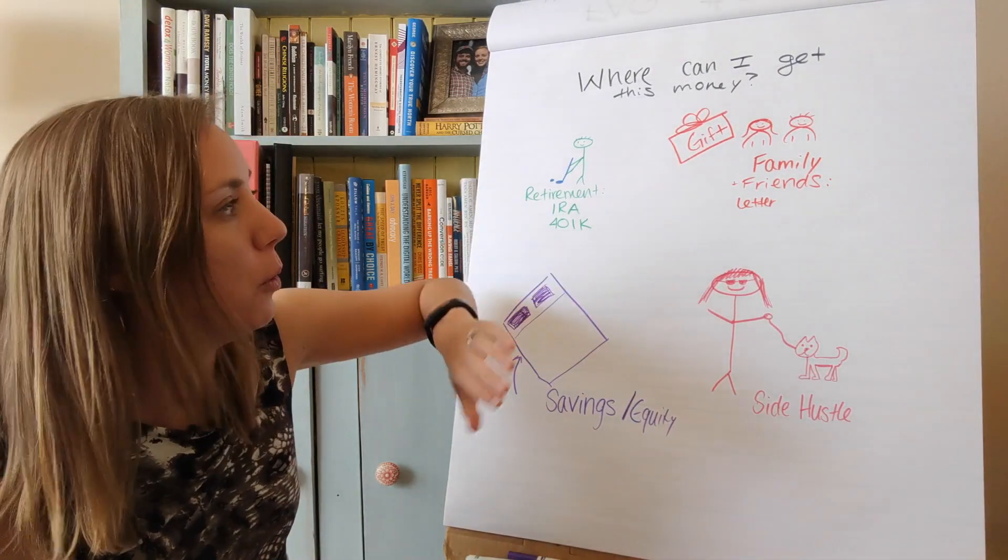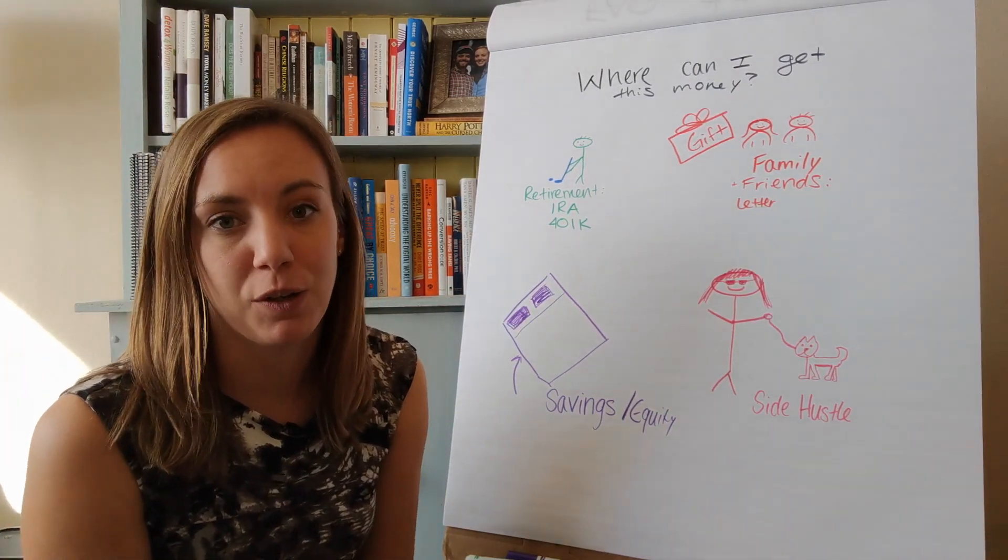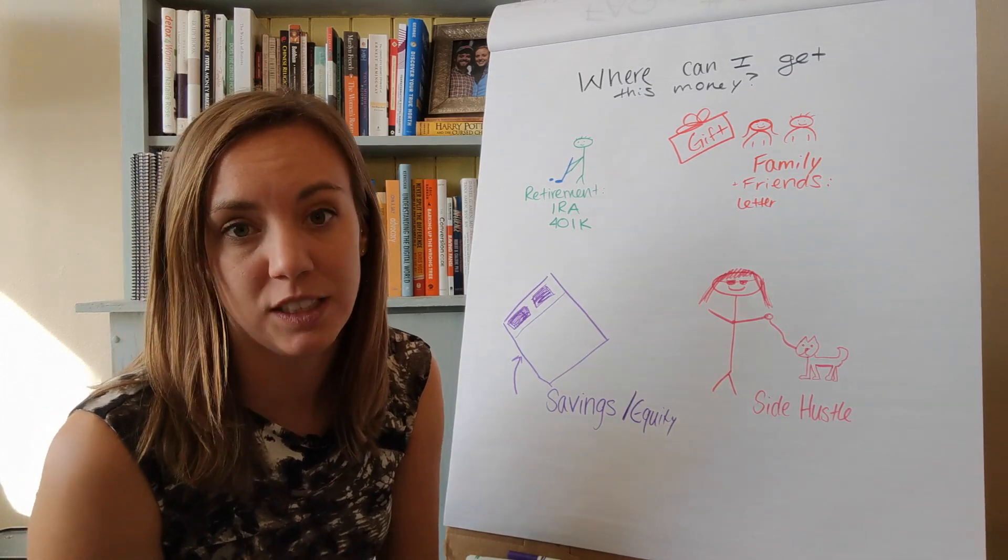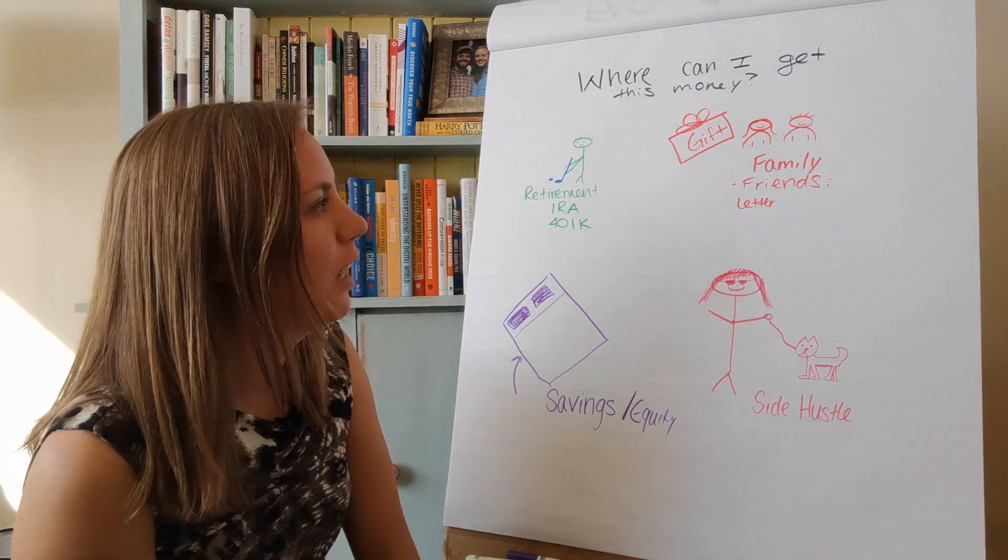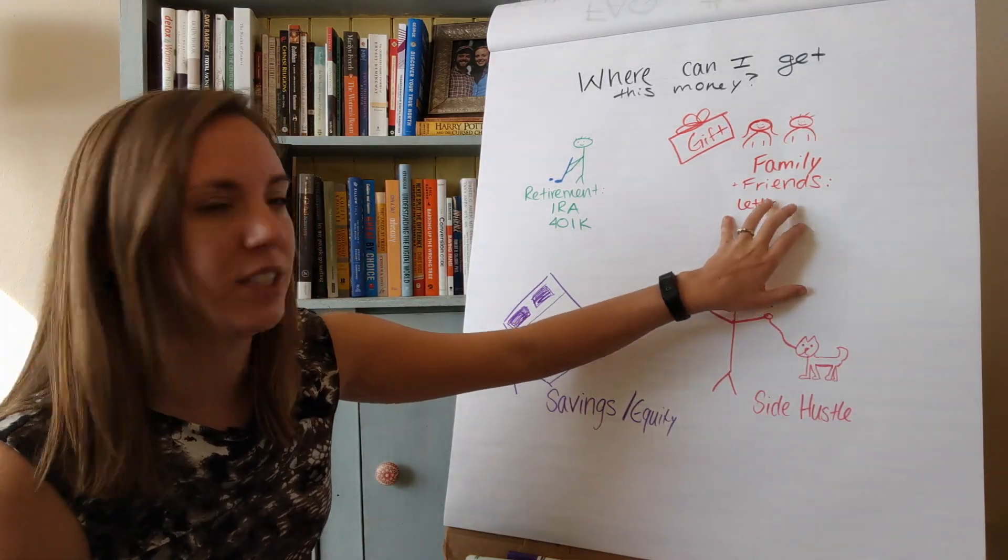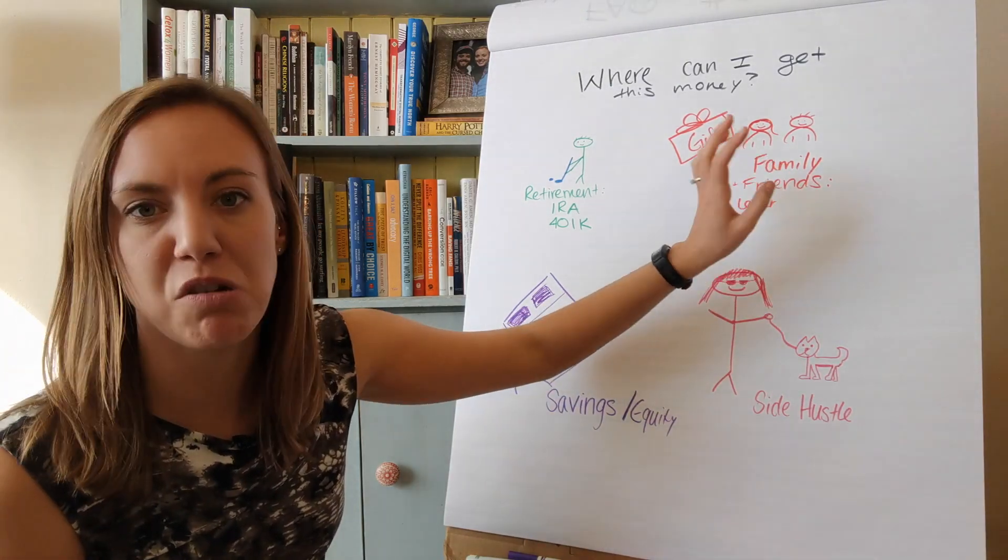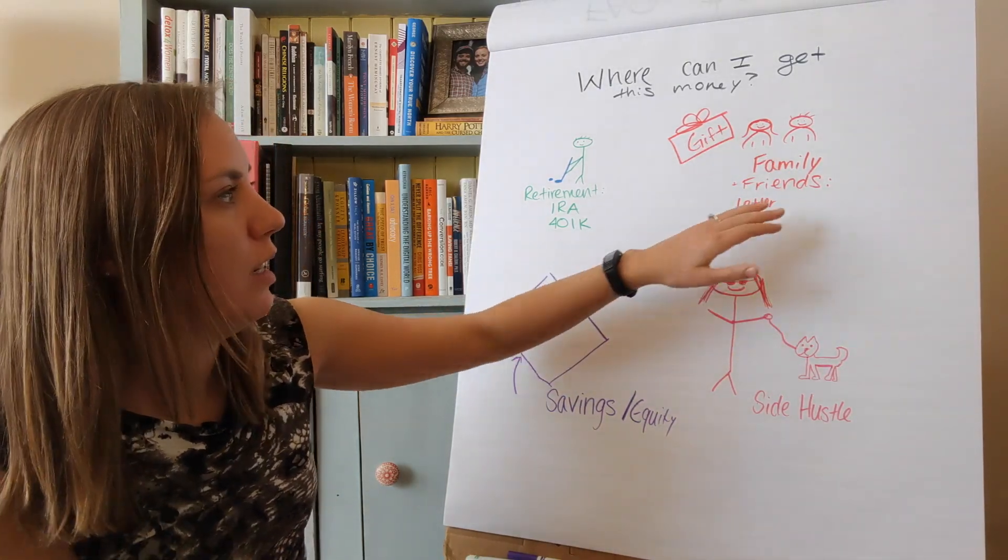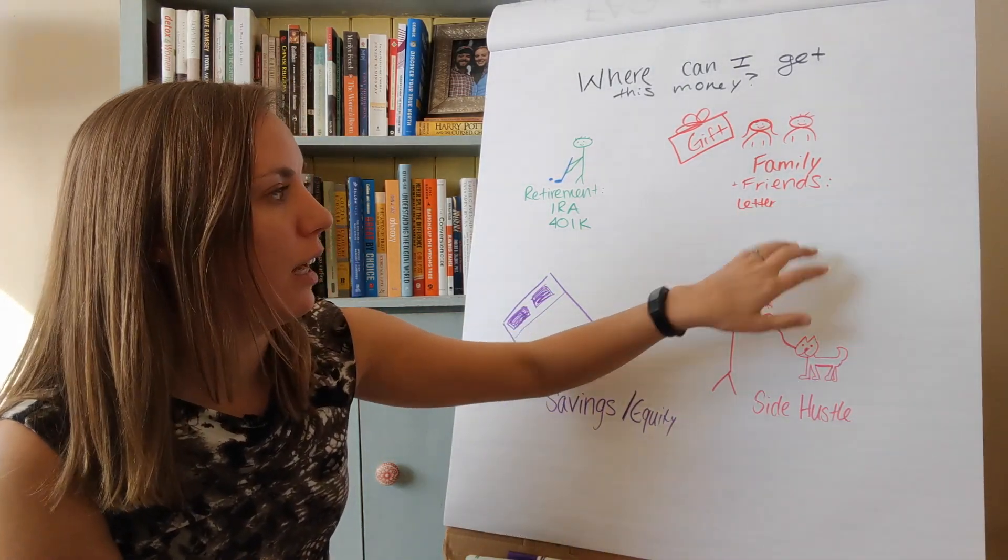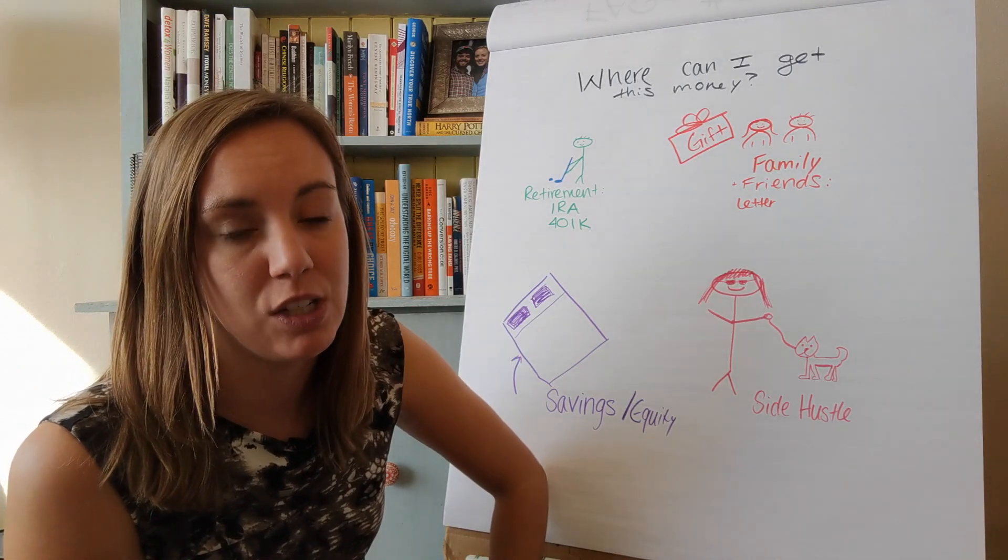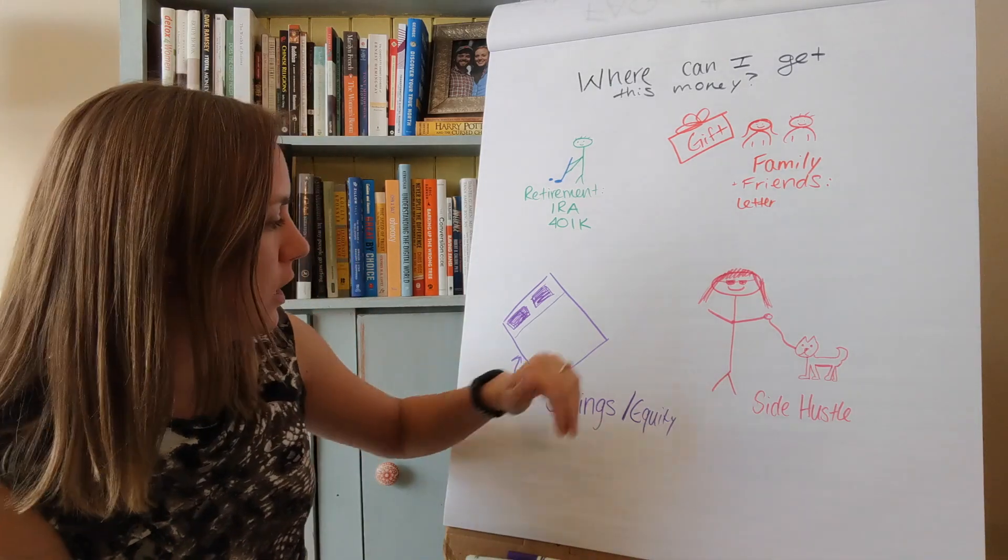You can pull it out of your retirement or you can get a gift. A lot of clients I work with get a gift from their family, usually their parents, sometimes their aunts, grandparents, or uncles. All you have to do is get a letter. They write a letter to the lender saying they're giving their son, grandson, daughter, or whoever X amount of money for the purchase of a home. Really simple, great way to help your kids buy a home without having to co-sign for them and be liable if they decide to stop paying their mortgage.